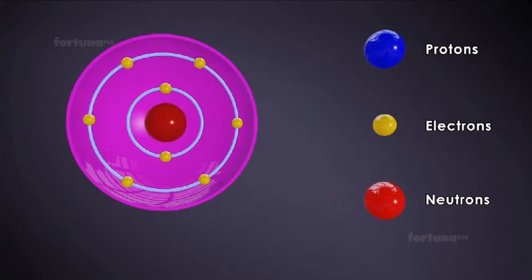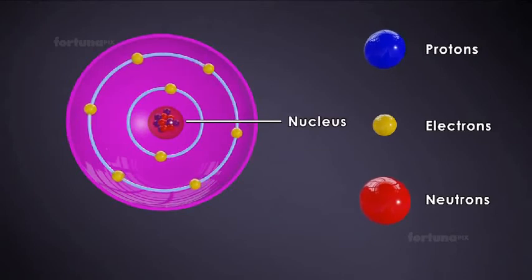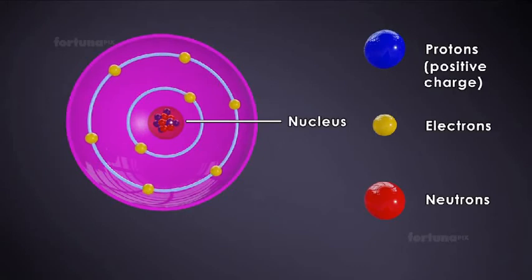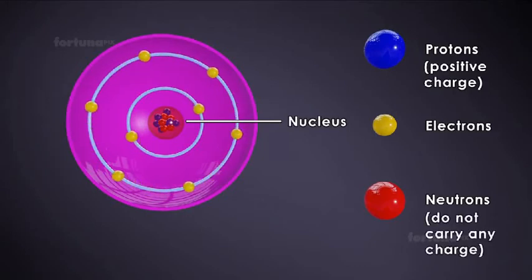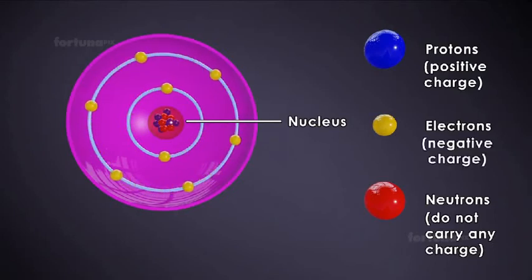In the atom center is the nucleus, which is made up of protons and neutrons. Protons carry a positive charge. Neutrons do not carry any charge, so they are electrically neutral. Electrons carry a negative charge and revolve around the nucleus in orbits.